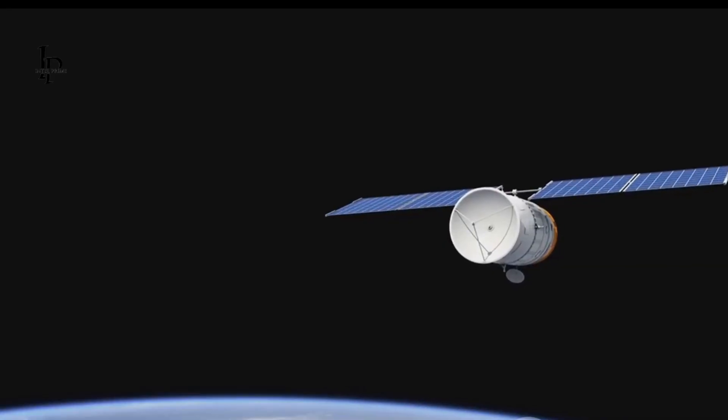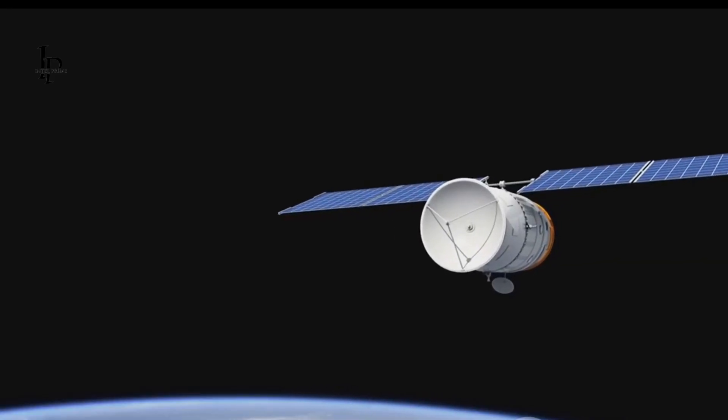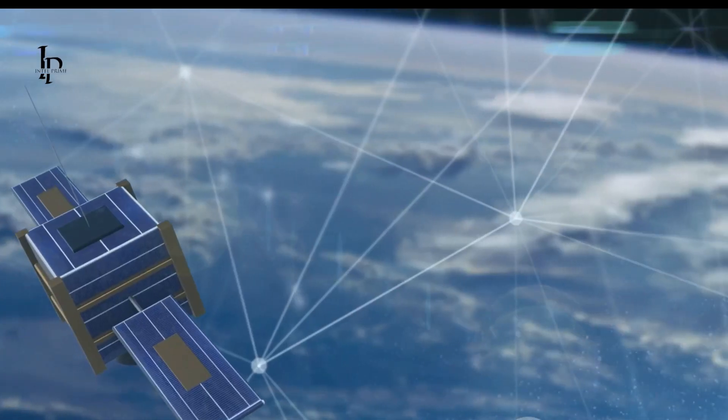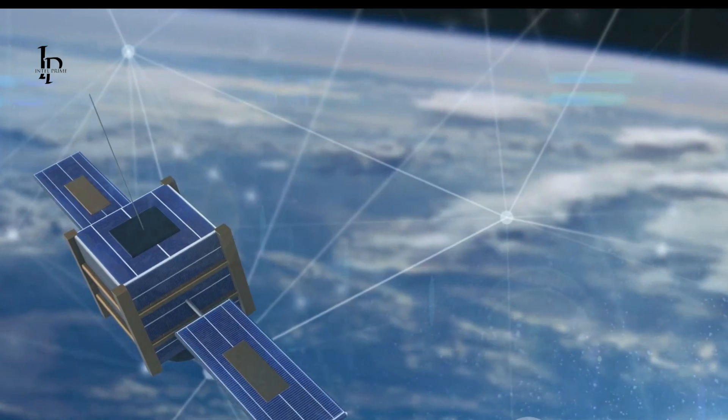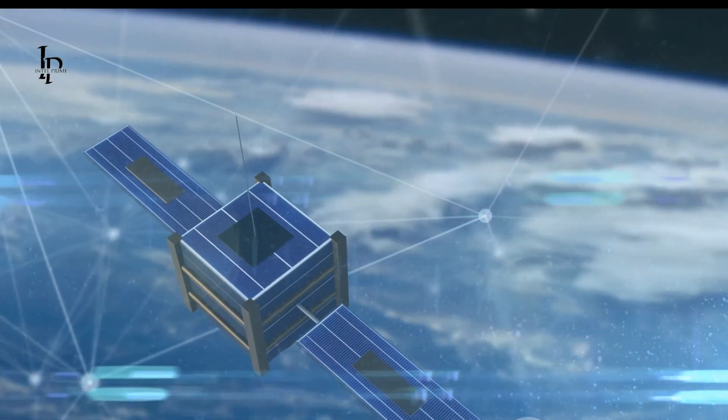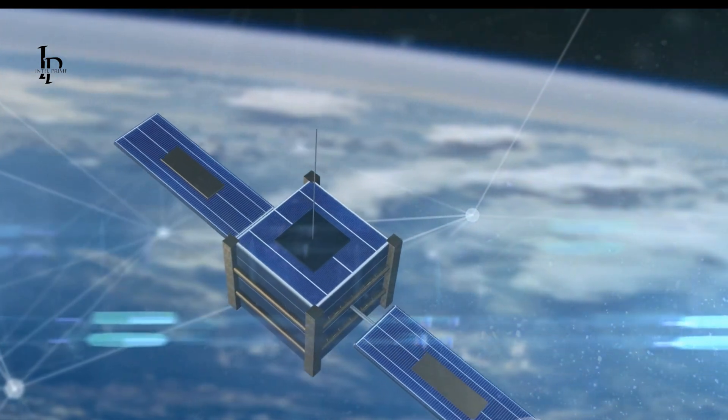TurkSat is no stranger to the satellite business, operating five communication satellites, TurkSat-3A, 4A, 4B, 5A, and 5B. These satellites serve a global audience of 3.5 billion people, spanning across 31 degrees, 42 degrees, and 50 degrees in east orbits.